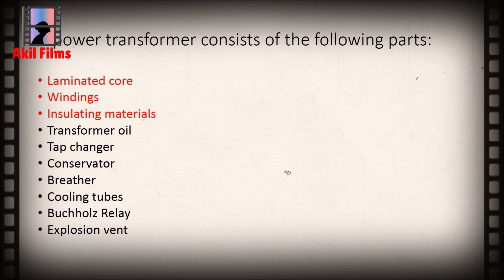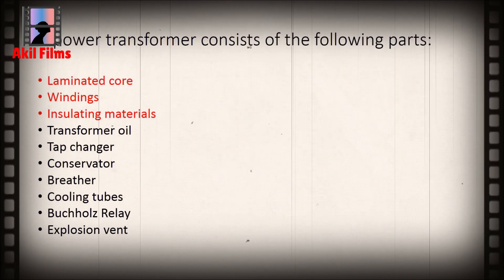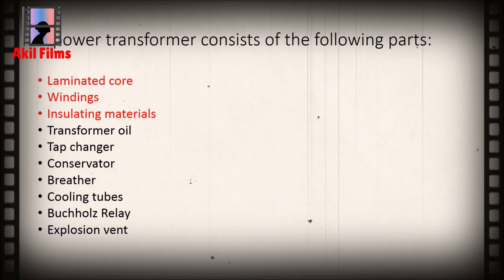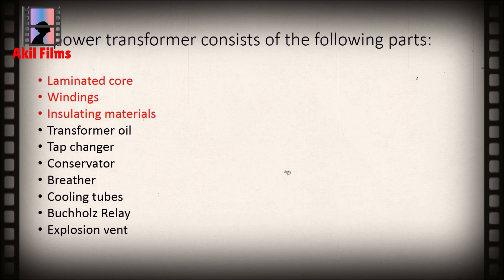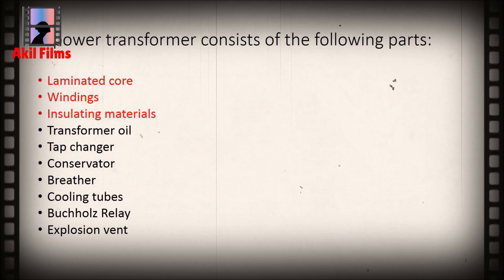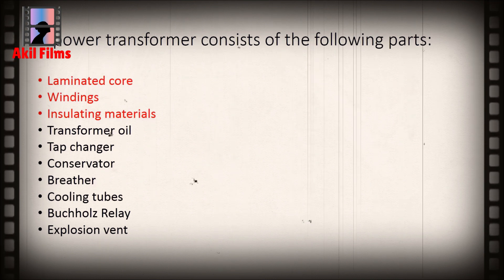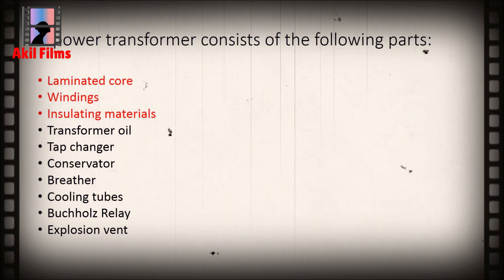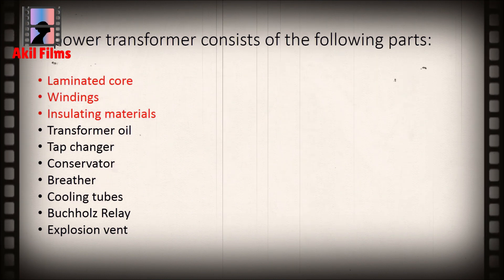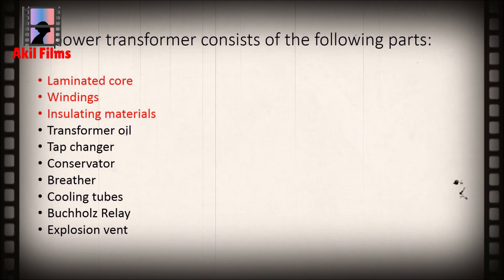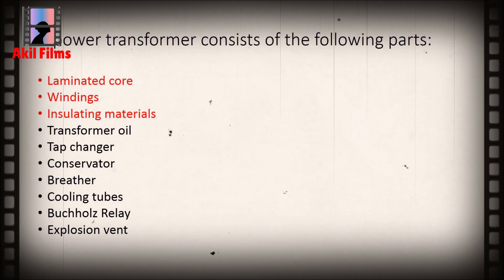A transformer consists of a laminated core, windings, insulating materials, transformer oil, tap changer, oil conservator, breather, cooling tubes, Buchholz relay, and explosion vent. Of these, the laminated soft iron core, windings, and insulating material are the primary parts and are present in all transformers, whereas the rest can be seen only in transformers having a capacity of more than 50 kVA.